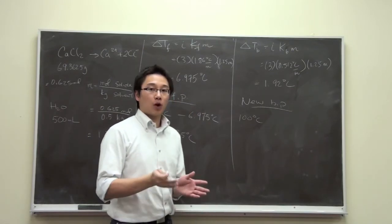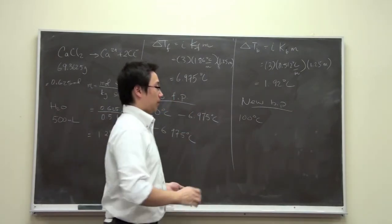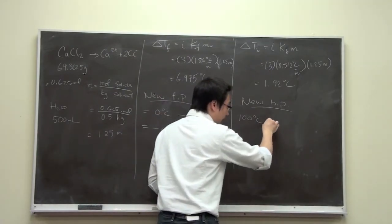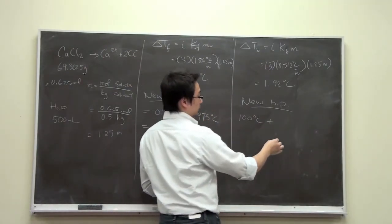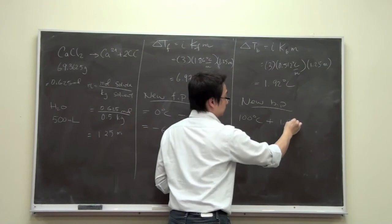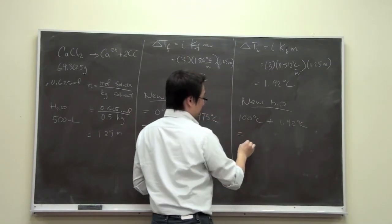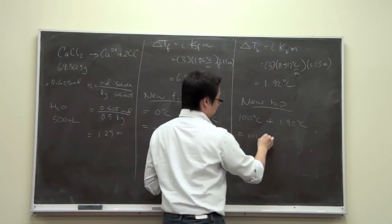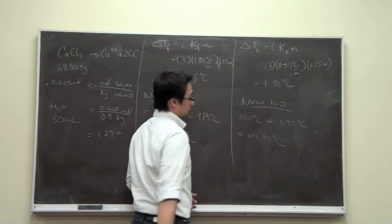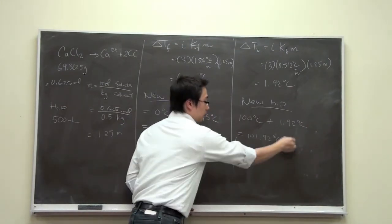Now in this case, we are talking about the boiling point elevation. We elevate the boiling point. So add 100 degrees Celsius plus 1.92 degrees Celsius. So we have 101.92 degrees Celsius. So this will be our new boiling point.